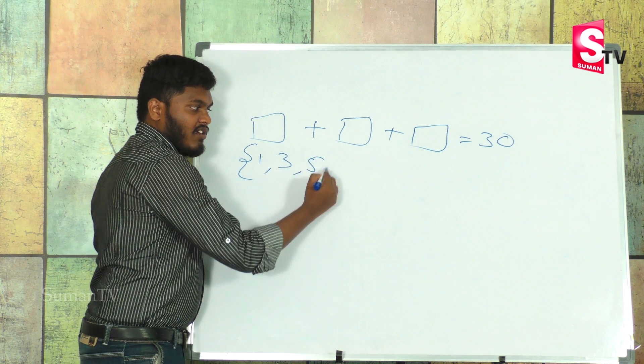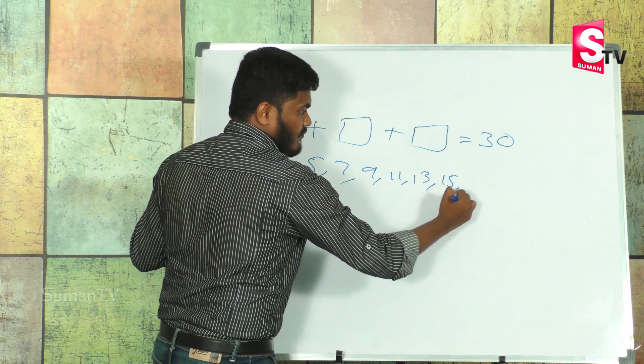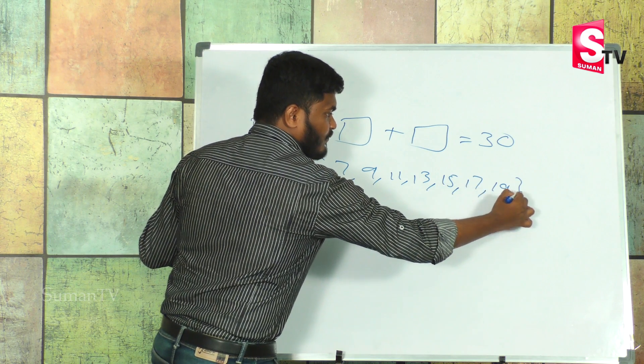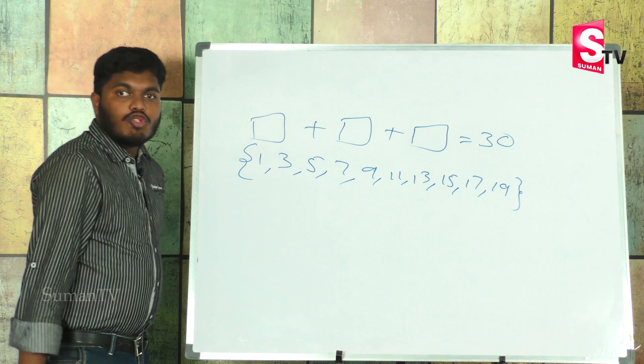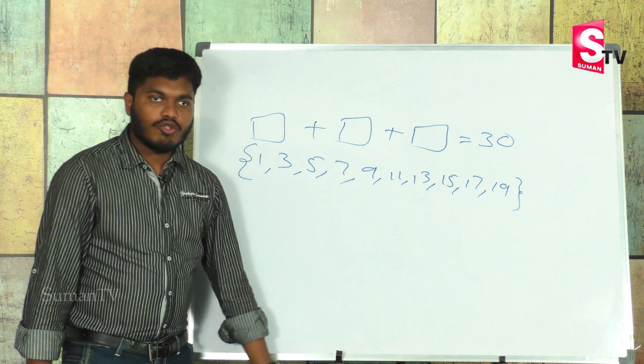One, three... Use these numbers in three blanks, any number of times. These odd numbers: 1, 3, 5, 7, 9, 11, 13, 15, 17, 19.